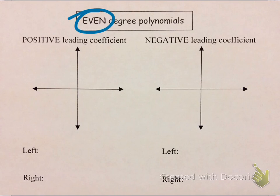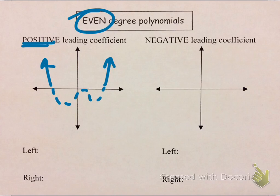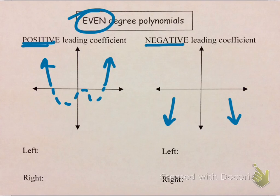For even-degree polynomials, the ends point in the same direction. With a positive leading coefficient, both ends point up. I'll draw the middle as dotted to indicate the middle behavior is unknown, but the ends definitely point up and up. With a negative leading coefficient, both ends point down, with the middle again left dotted.